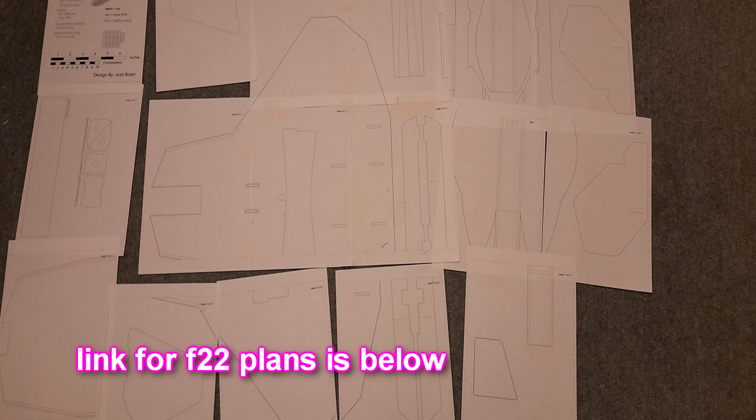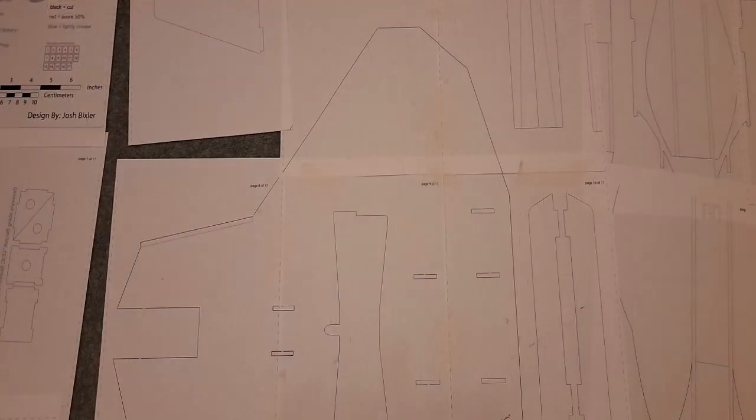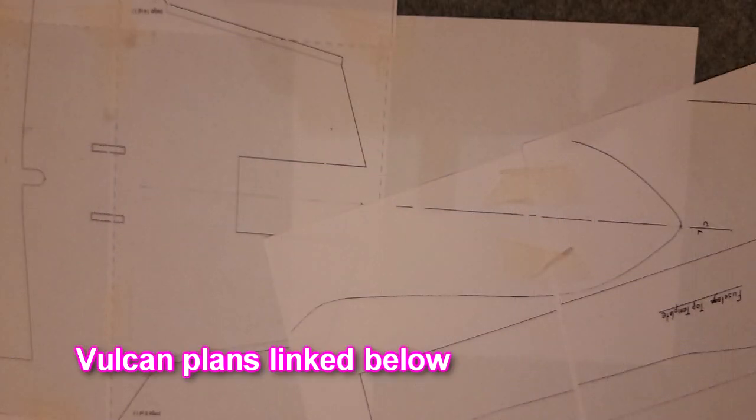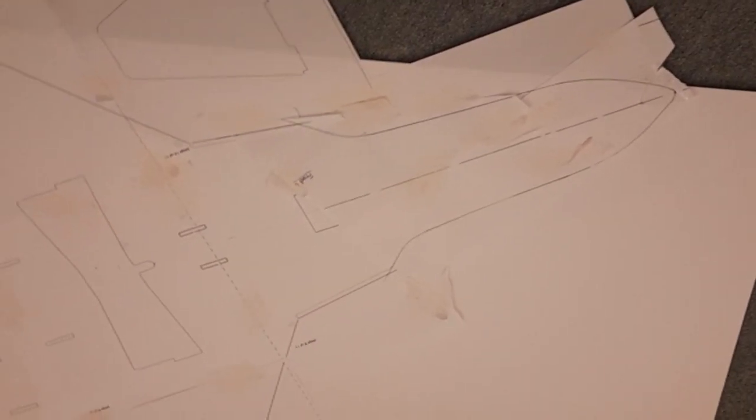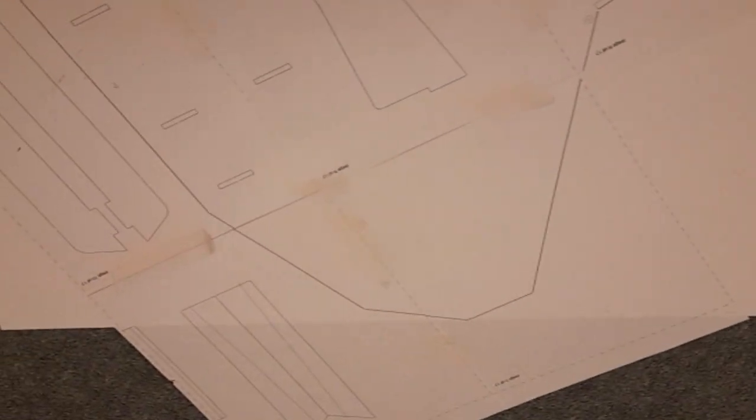Right, the first step of course is to download the plans for the F22 from the Flight Test website—tiled plans so you have to stick them all together—and then also download the nose from the Vulcan and combine the two so that I've got a plan for the wing with a different flat board nose.